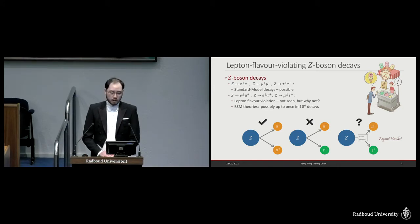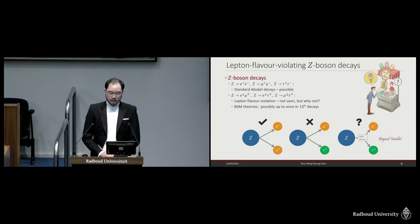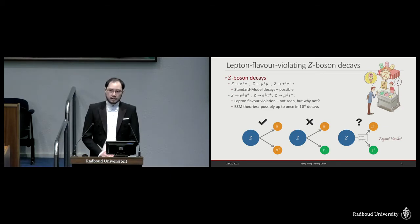Specifically, my thesis searches for lepton flavor violating Z boson decays. The Z boson is a particle in the standard model that is relatively heavy and short-lived. It is known that the Z boson can decay into a lepton and an antilepton of the same flavor — these are the standard model decays, and they have been observed many times in experiments. But what I'm interested in is to find out whether the Z boson can also decay into leptons of different flavors, and that is lepton flavor violation. So far, these decays have not been observed, but actually there is no good reason for why nature would forbid these decays, and in beyond the standard model theories, some predict that these decays could happen possibly up to once in every million decays.